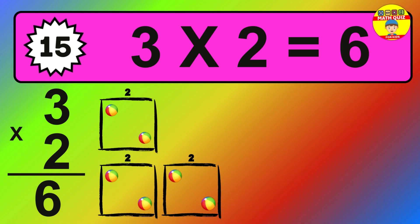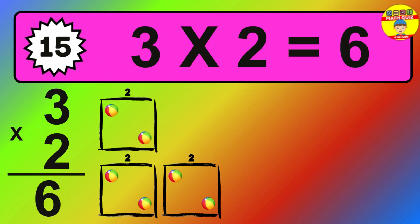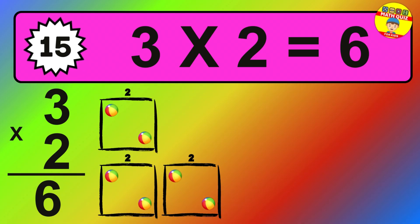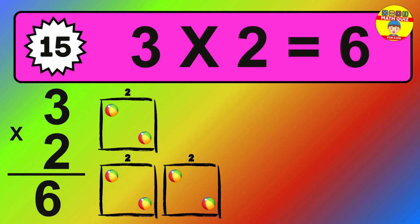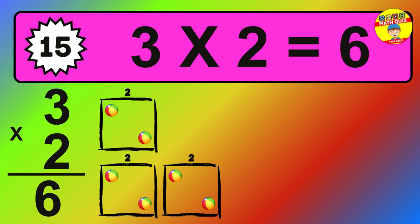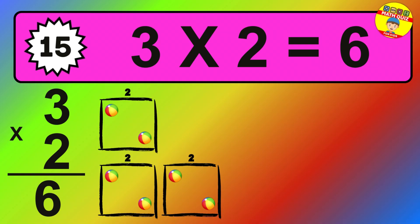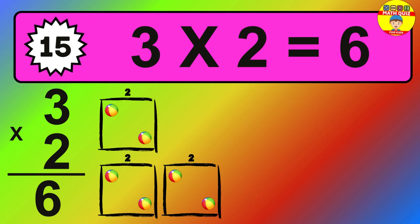Question fifteen: three times two equals what? The answer is: three times two is 6. To calculate, we have three groups with two balls each one. So how many balls do we have? 6 balls.